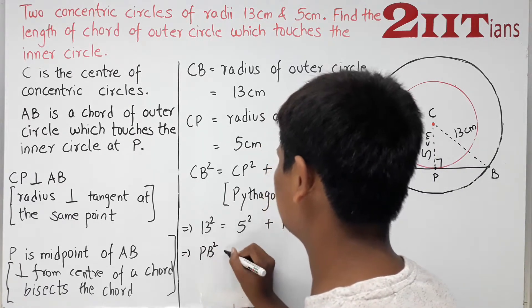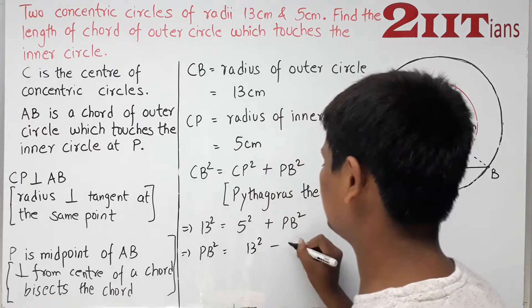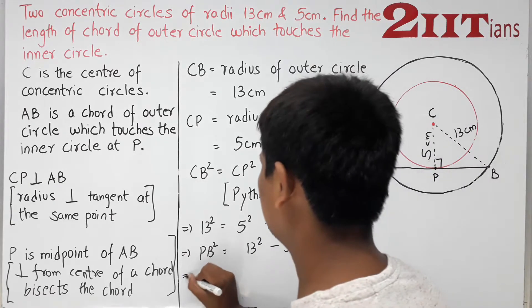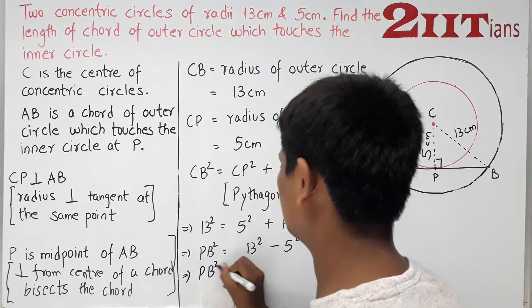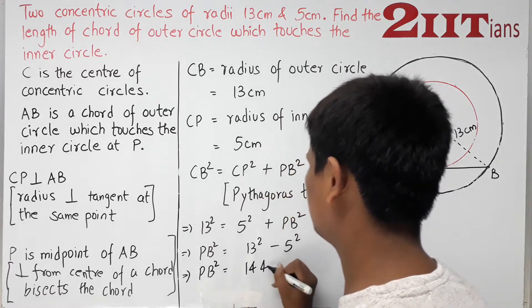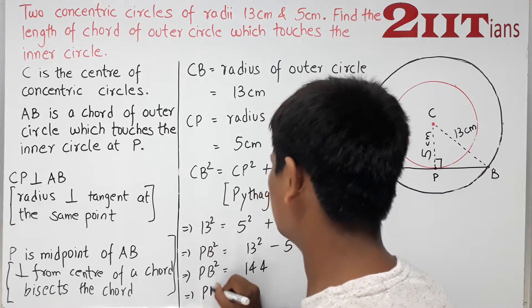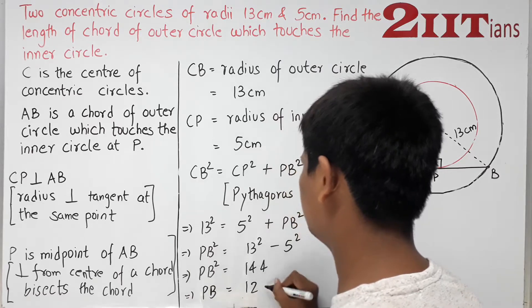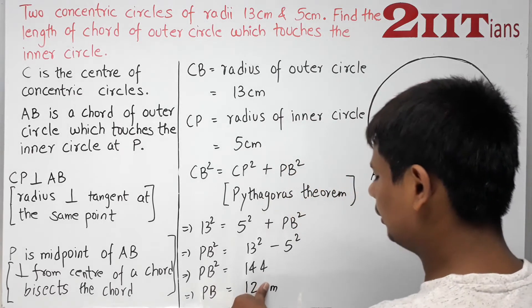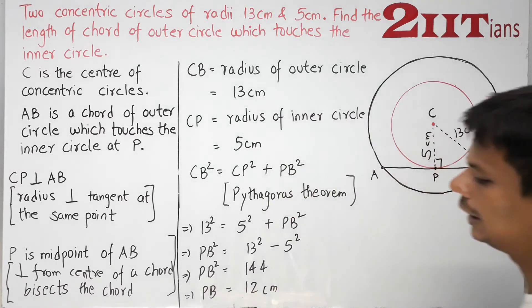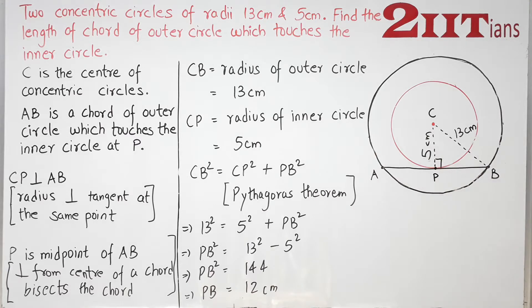We know CB is 13, CP is 5. PB² = 13² - 5² = 144. PB = 12 cm. But our goal is not to find PB.